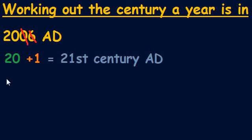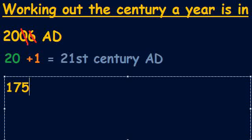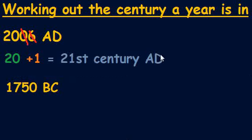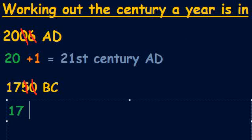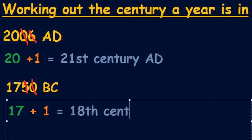Let's try it with another example. This time let's take the year 1750 BC. We cross off the last two numbers of our year, which leaves us with 17. We take that 17 and, just as before, we add 1 to it. That means 1750 BC is in the 18th century — this time BC. So 1750 BC is in the 18th century BC.